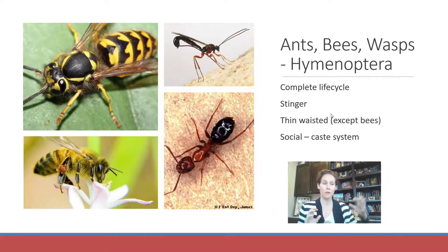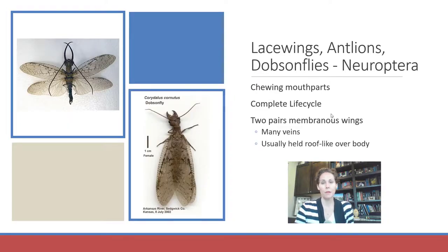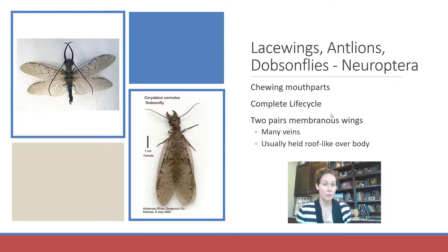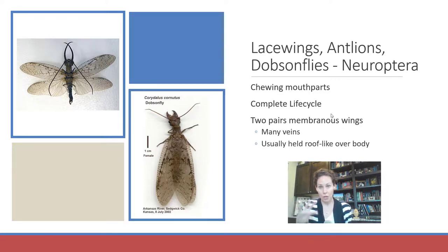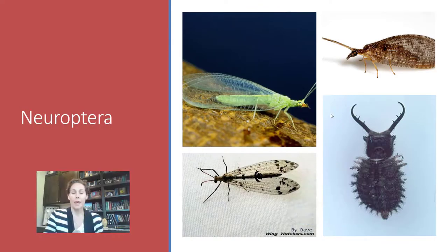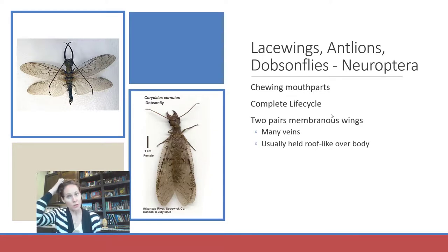My absolute favorite order of insects is Neuroptera — these are the lacewings, antlions, dobsonflies, owlflies, snakeflies, and mantispids. They all have chewing mouthparts and a complete life cycle. Many are associated with aquatic environments. They're called Neuroptera because they have many veins running through their wings — very lacy-looking. Their wings are generally held over the body like a tent. Dobsonflies used to be in their own order Megaloptera but are now connected with Neuroptera.